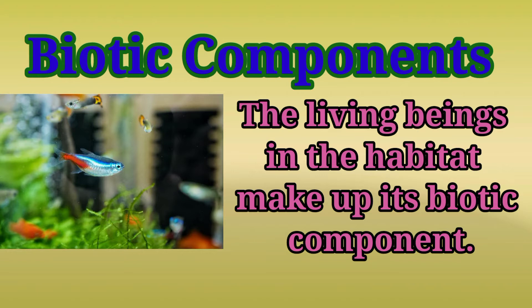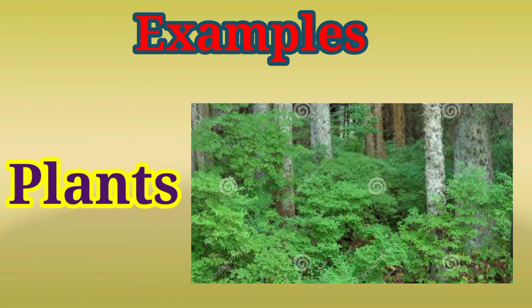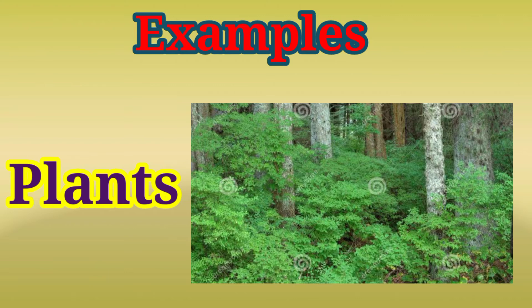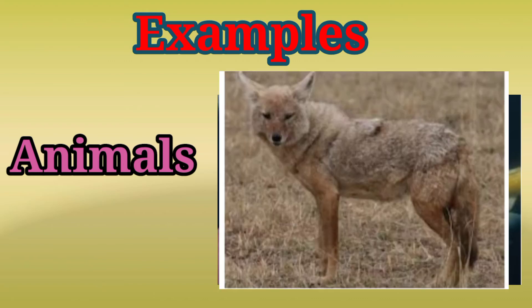Let's discuss some examples of biotic components. The first example is plants. Plants are also called heterotrophs because they make their own food, so they are a living component. The second example is animals. Animals are also called heterotrophs and are also an example of a biotic component.